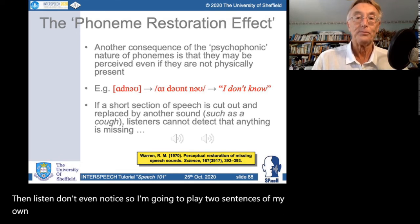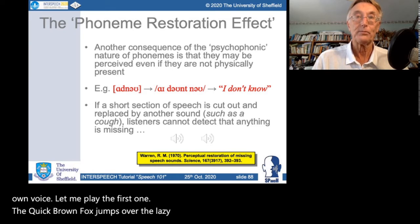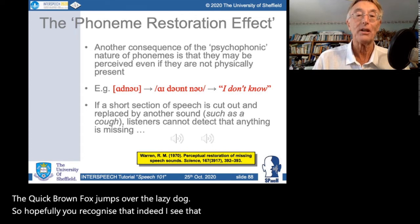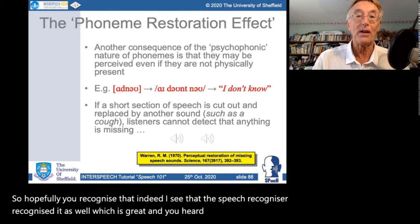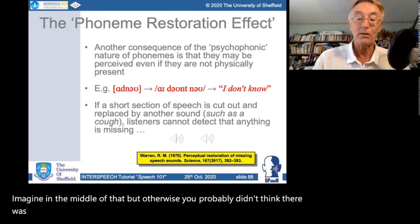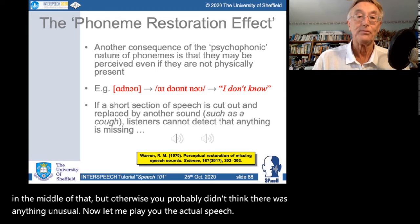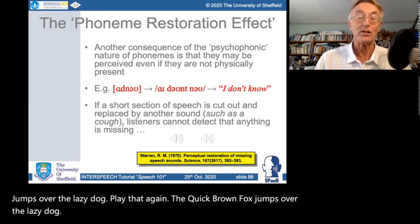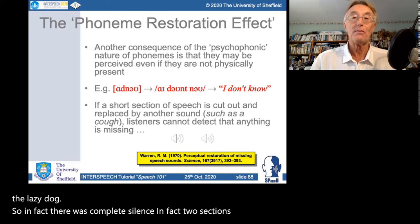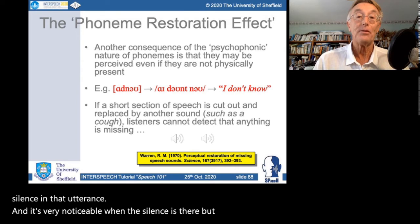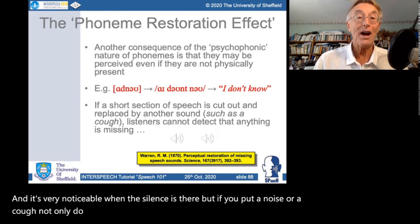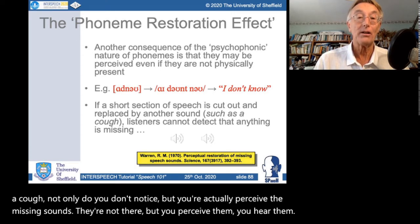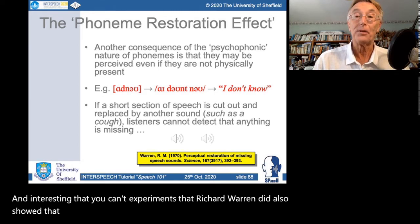I'll play two sentences. First: 'The quick brown fox jumps over the lazy dog' — with what sounds like two coughs in the middle, but otherwise nothing unusual. Now here's the actual speech without the coughs: 'The quick brown fox jumps over the lazy dog.' In fact there was complete silence in two sections of that utterance. It's very noticeable when the silence is there, but if you put a noise or a cough, not only do you not notice, but you actually perceive the missing sounds — they're not there, but you hear them. Warren's experiments also showed that people find it very difficult to localise the cough.